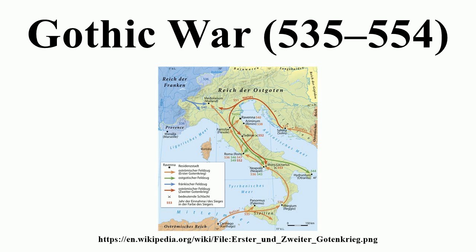Mundus had quickly overrun Dalmatia and captured its capital, Salona. But a large Gothic army arrived to reclaim the province, and Mundus' son Mauritius fell in a skirmish. Enraged by this loss, Mundus marched with his army against the Goths and inflicted a heavy defeat upon them. However, in the pursuit, Mundus himself was mortally wounded. As a result, the Roman army withdrew, and all of Dalmatia, with the exception of Salona, was abandoned to the Goths.